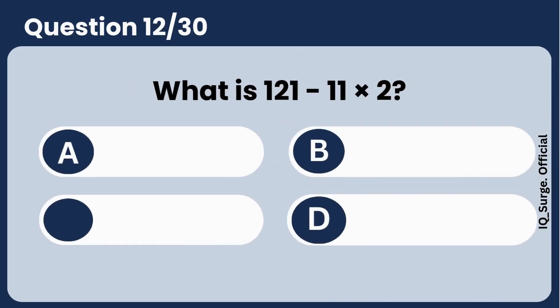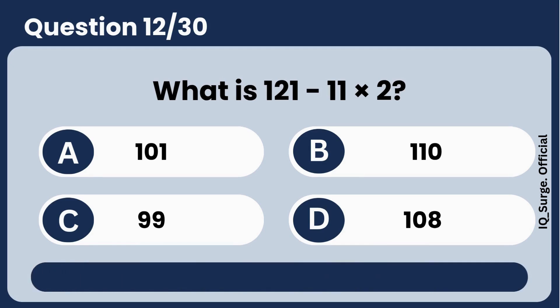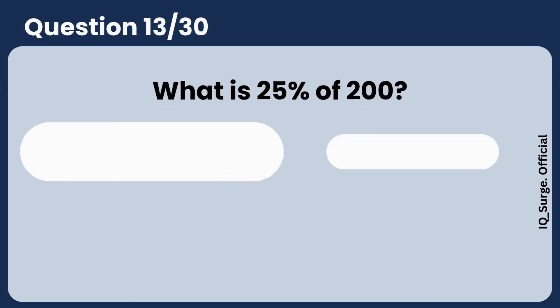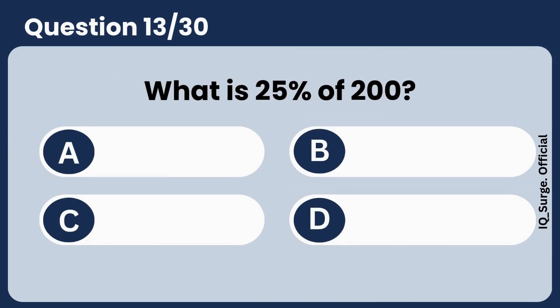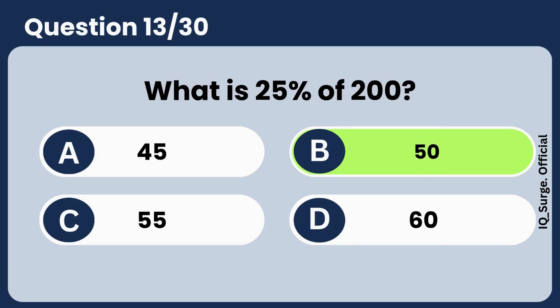What is 121 minus 11 times 2? Answer C, 99. What is 25% of 200? Answer B, 50.